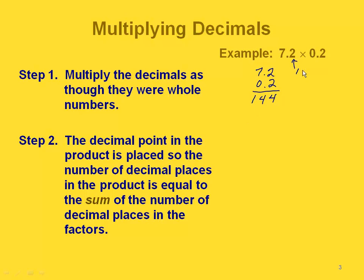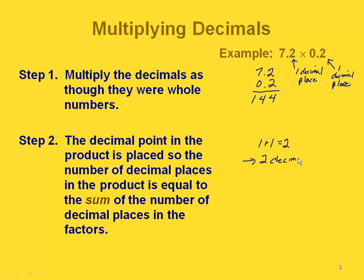Now we're going to go back and put the decimal point in that product. We have to count how many decimal places are in each of our two numbers — this one has one decimal place, and this one also has one decimal place. Our second step is to add the number of decimal places from the two numbers we were multiplying. Since we have one here and one here, one plus one is two, meaning there are going to be two decimal places in our product.